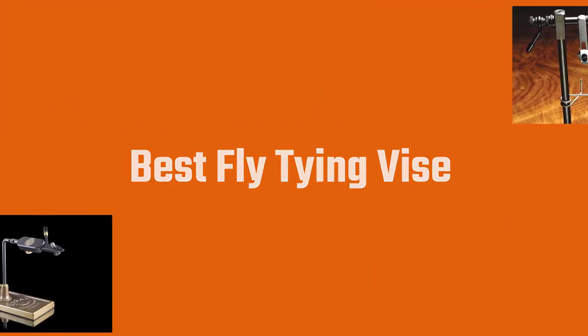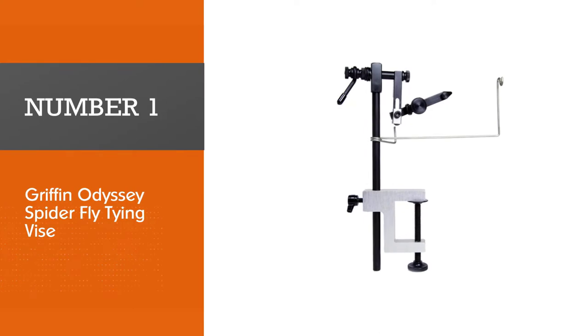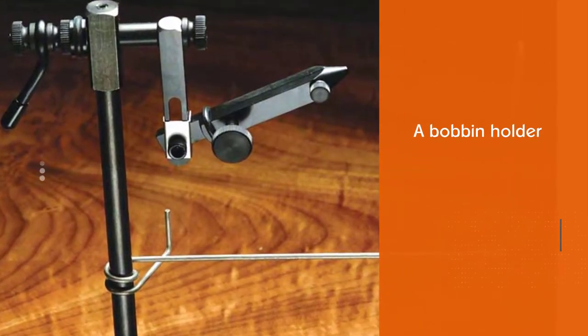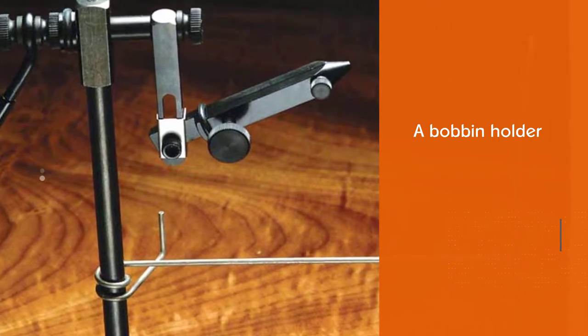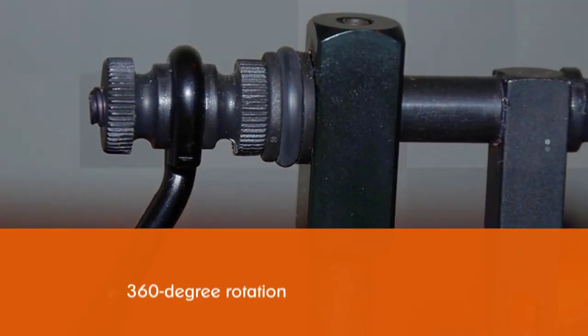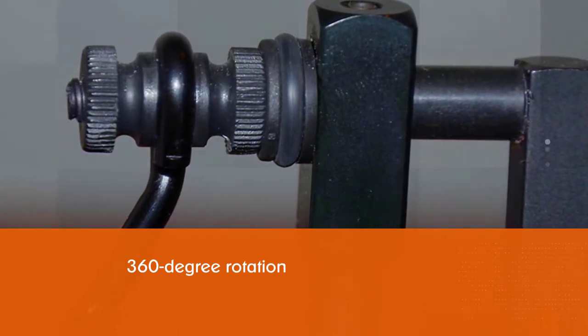Number one: Most popular Griffin Odyssey Spider fly tying vice. The Griffin Odyssey Spider vice is probably the best fly tying vice for the money if you are just getting started. It has everything you ask for in a fly tying vice: a bobbin holder, which is a prerequisite for a rotary vice, and 360-degree rotation.